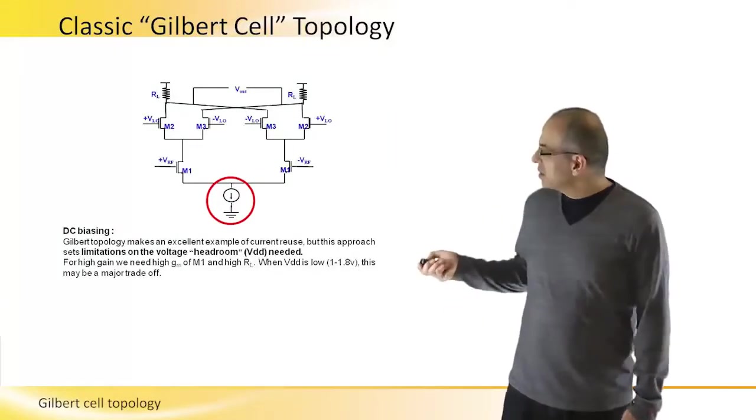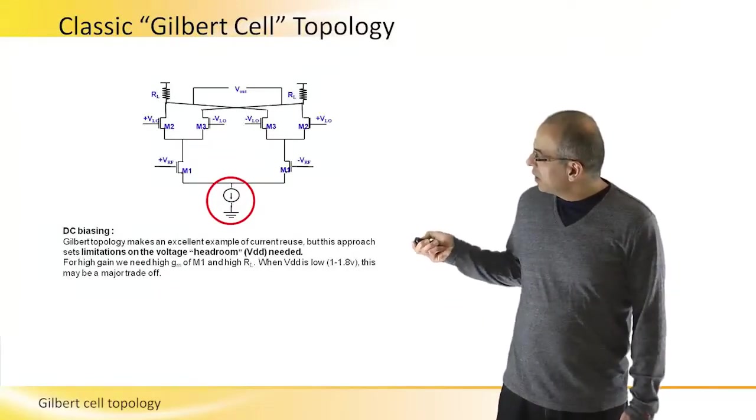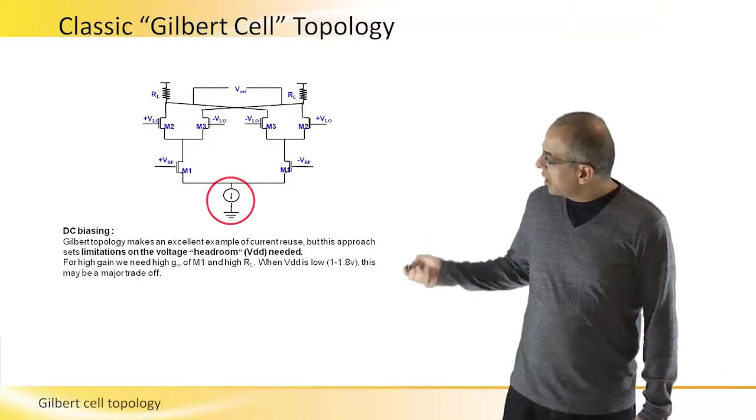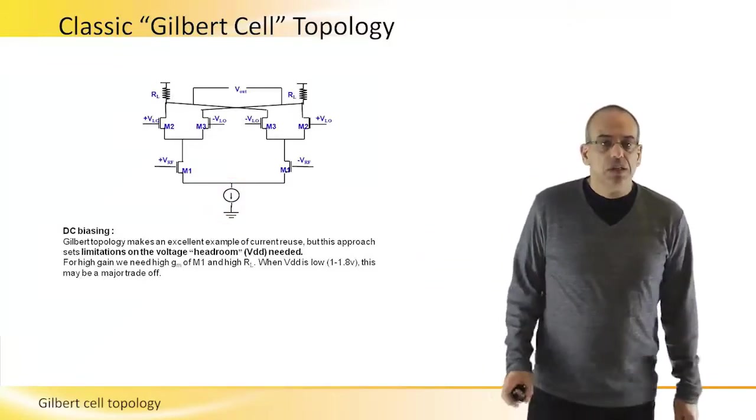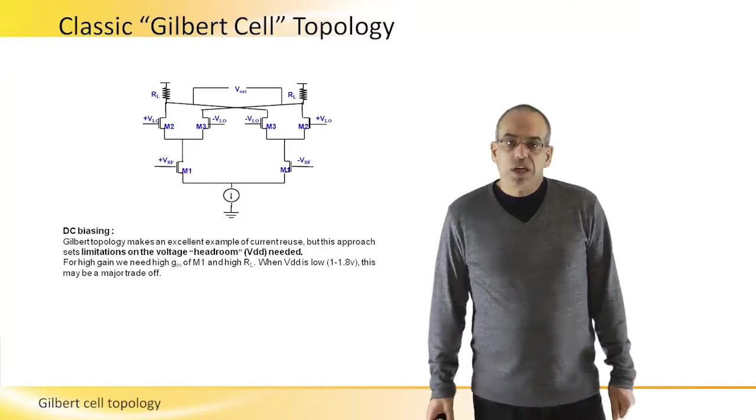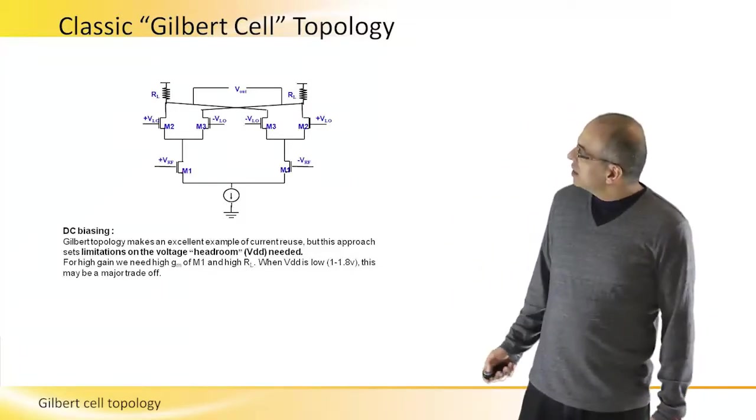DC biasing is really dominated by this current source. What we can see in this slide, and this is really a Gilbert cell mixer as it can be found in the literature.